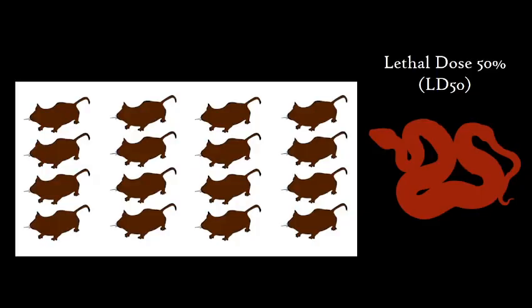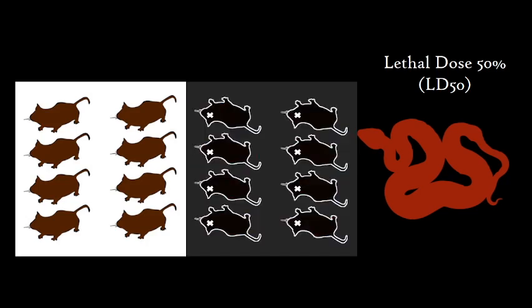Lethal dose 50%, or LD50, is the amount of a substance required to kill 50% of a test population. For example, the LD50 for a snake's venom would be how much venom it takes to kill half of the test mice population.